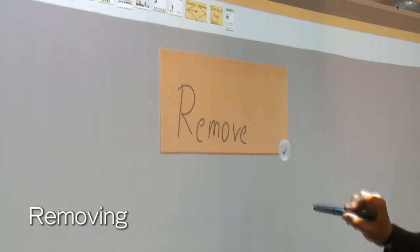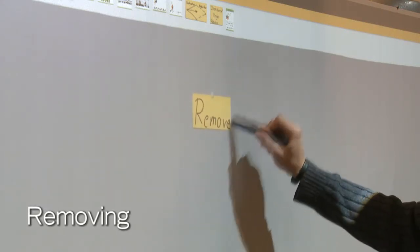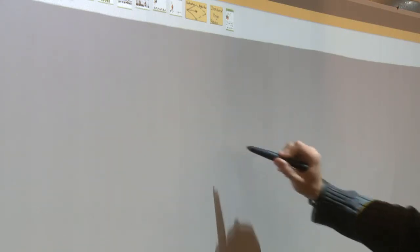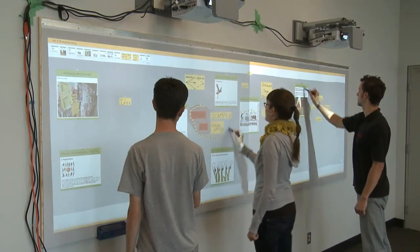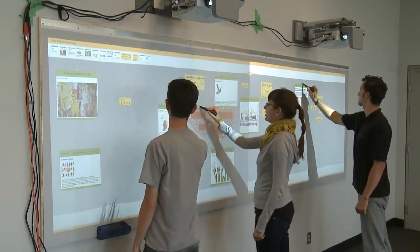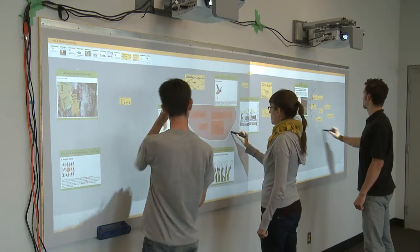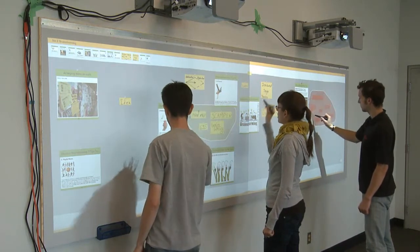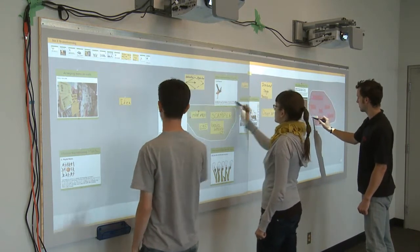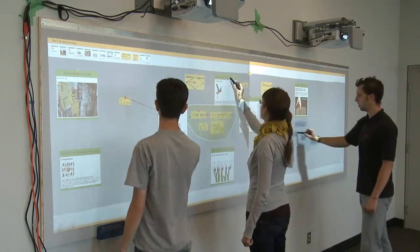Items can be removed with a scribbling gesture. The process of refining and selecting promising ideas is supported through connections and grouping, as well as the ability to save and load states.